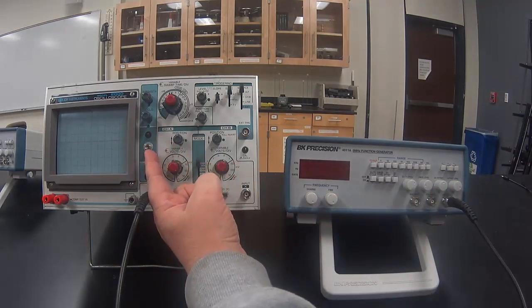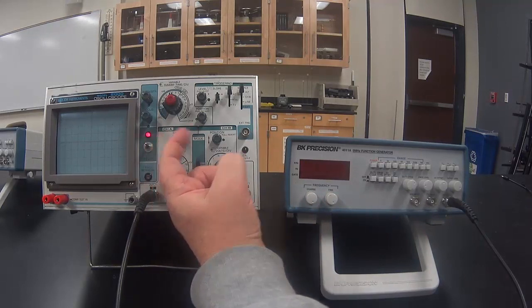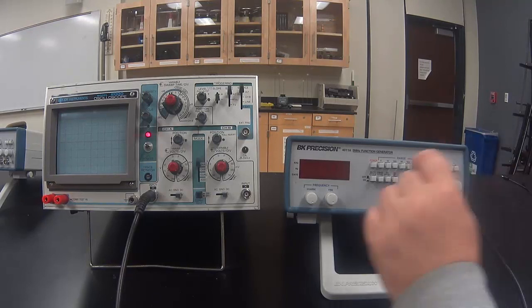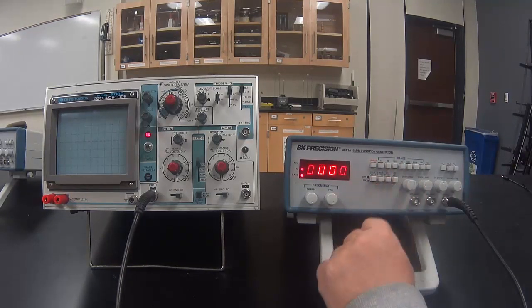Turn the oscilloscope on with the switch. Turn the function generator on with the button.